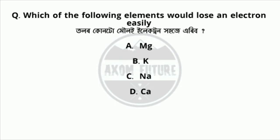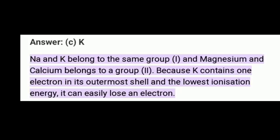The answer is potassium. This relates to the ionization energy of the electron. Comparing magnesium, calcium, sodium, and potassium — potassium has the lowest ionization energy, so it loses an electron most easily.